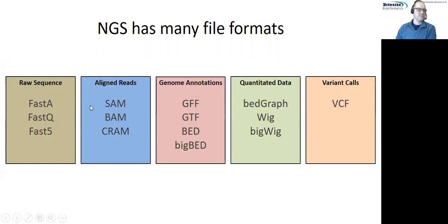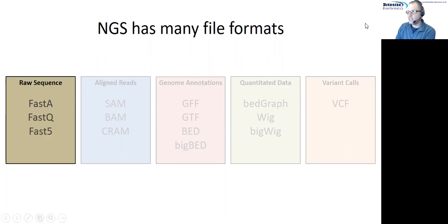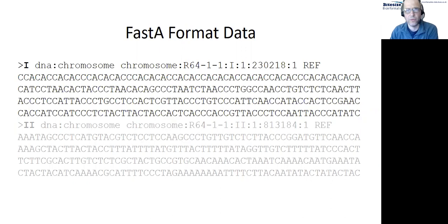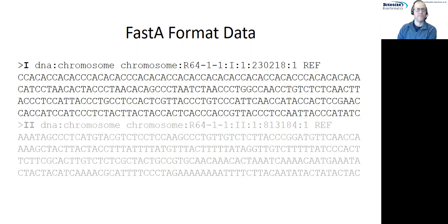We'll start on the left-hand side with raw sequence, beginning with the simplest possible format for storing a reference sequence. With NGS, you obviously need to deal with reference sequences — an existing assembled sequence with no other information, no annotations, no qualities. The simplest and most commonly used format for this is the FASTA format, which has been around forever and is about as simple as a file format gets.